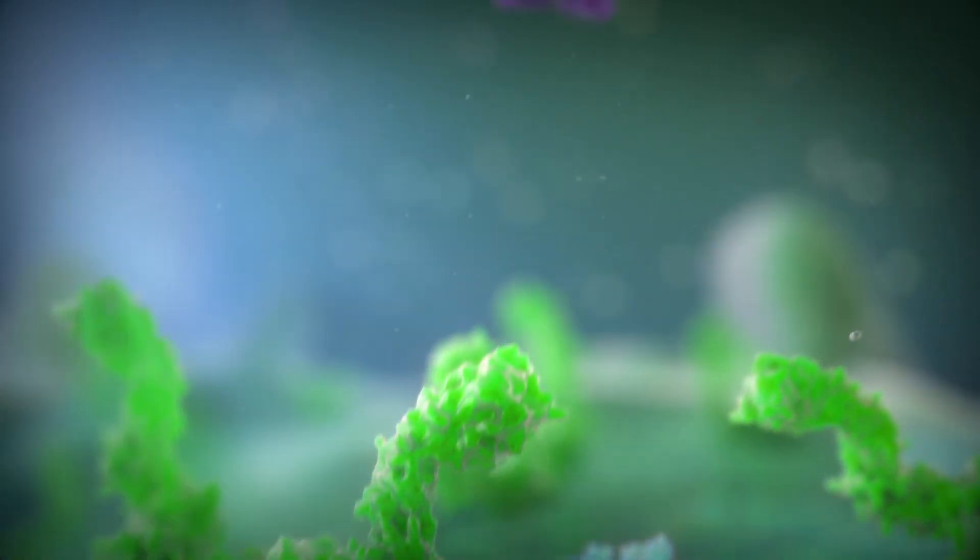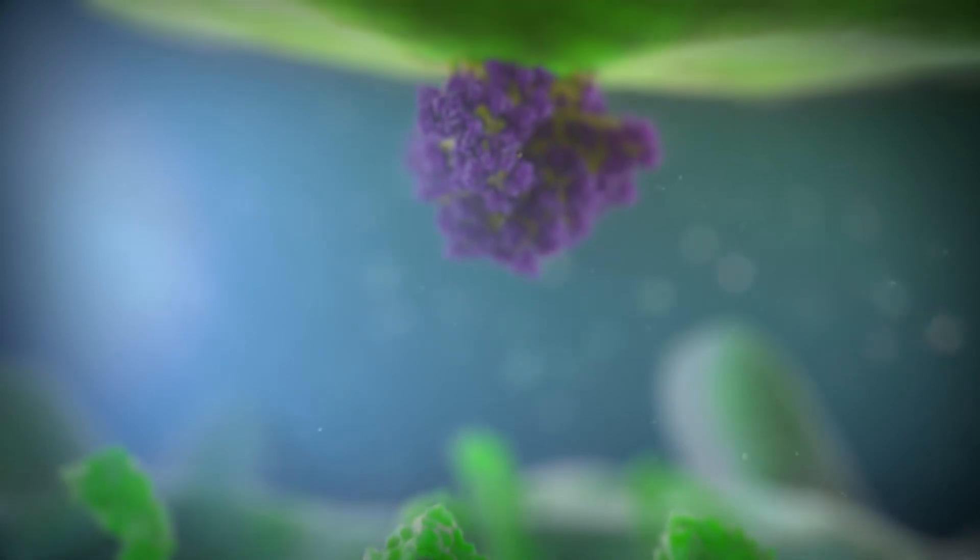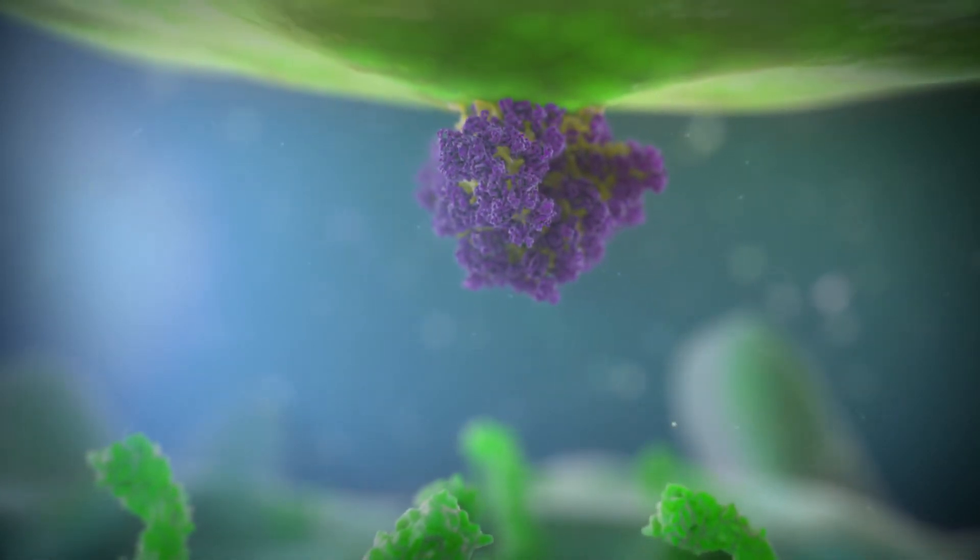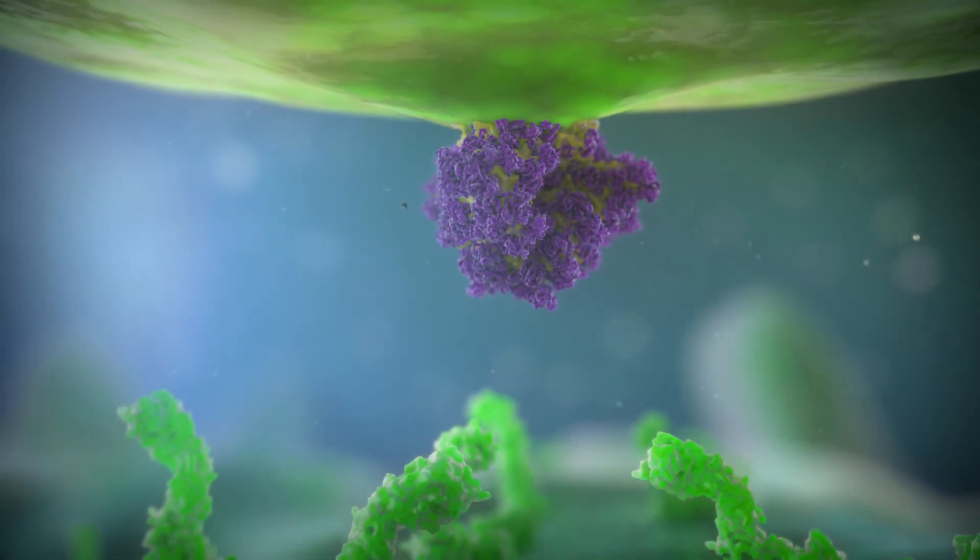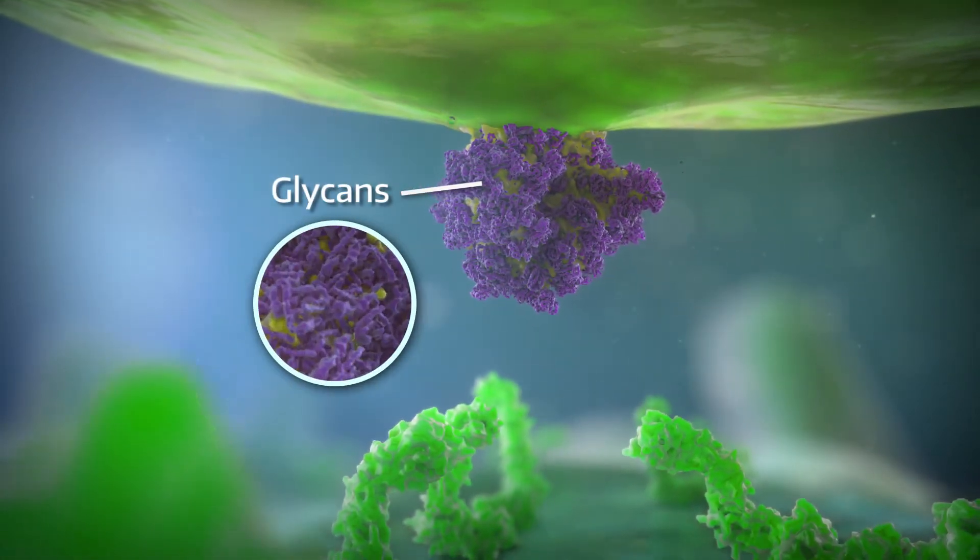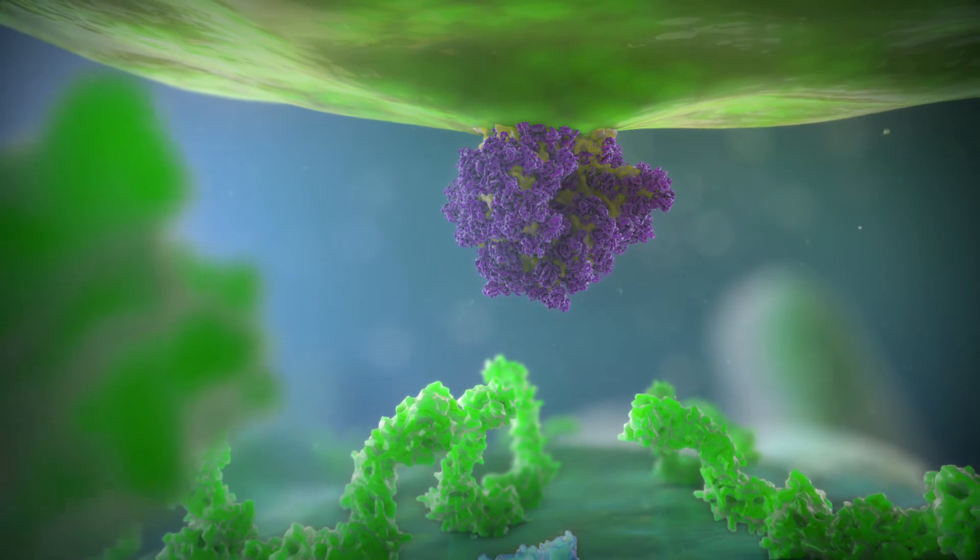Envelope glycoproteins are arranged on the surface of the enveloped HIV virion as a series of spikes. Each spike is heavily coated in glycan molecules which help shield the virion from the body's immune system.